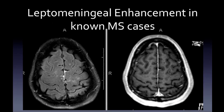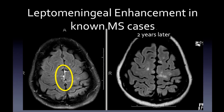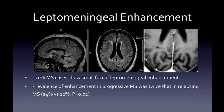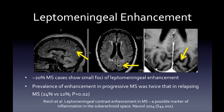Leptomeningeal enhancement is possible in known MS cases — about 20% show small foci of it, which can simply be a sign of active cortical inflammation. In this case, leptomeningeal signal on FLAIR and post-contrast T1 preceded development of more cortical and subcortical lesions two years later. Don't be alarmed if you see this in a known MS patient, but if the patient is not diagnosed with MS, consider other explanations — we'll cover those in part two.